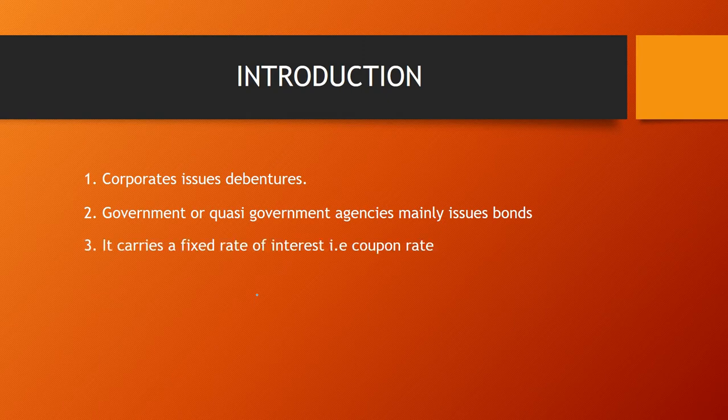In the previous lecture we also learned that bonds and debentures carry a fixed rate of interest, also known as the coupon rate. The fixed rate of interest is calculated by multiplying the coupon rate with the face value to get the annual interest amount.